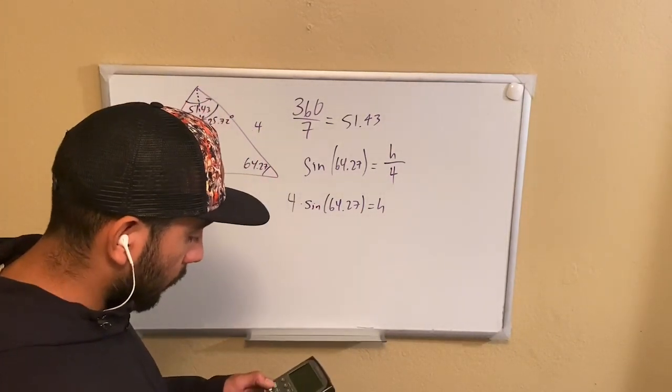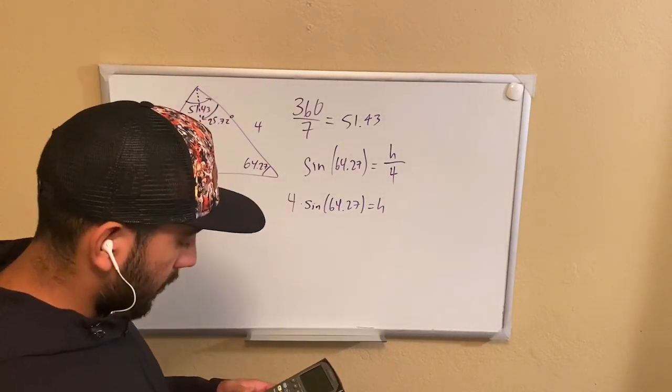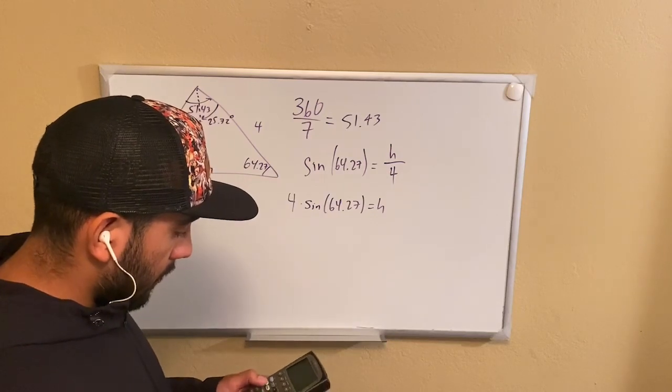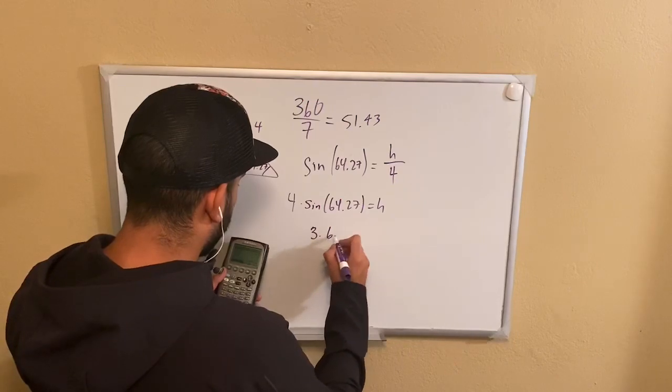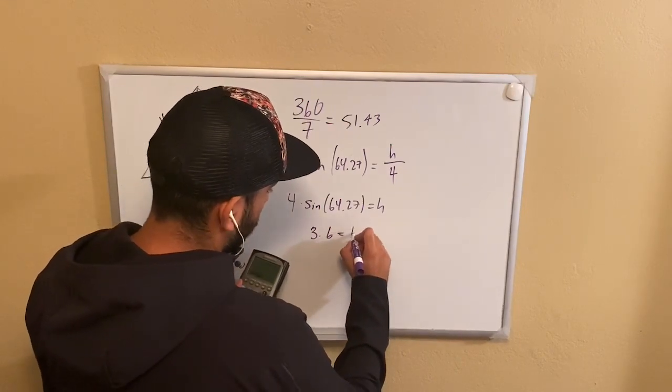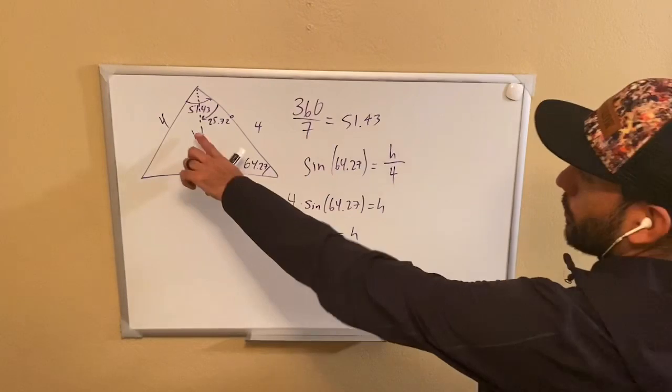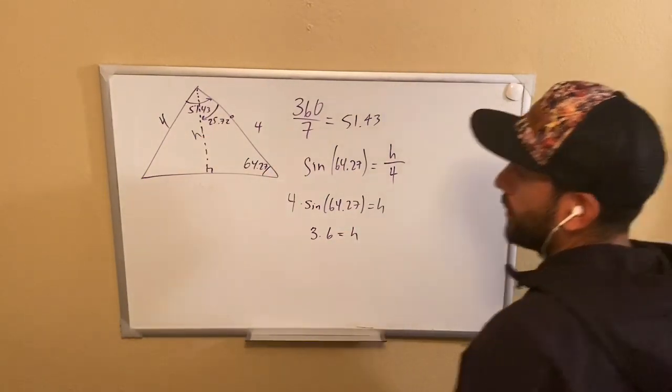So let's go ahead and find that. Luckily for us, we have a nice calculator here. If we get that, we're going to get 3.6 equals to our height. Now, we know the height. We know that's going to be 3.6.